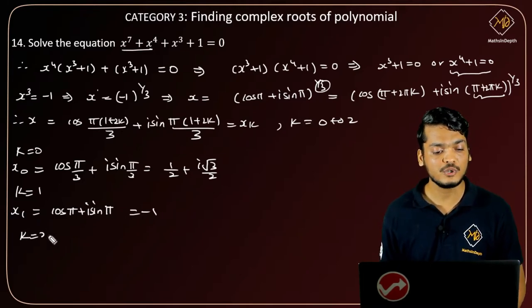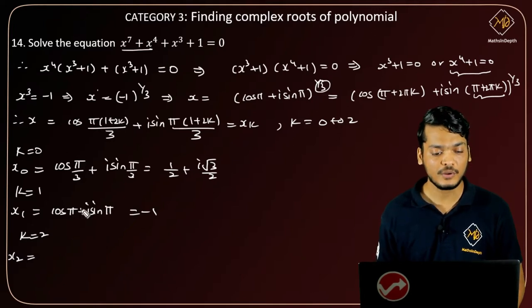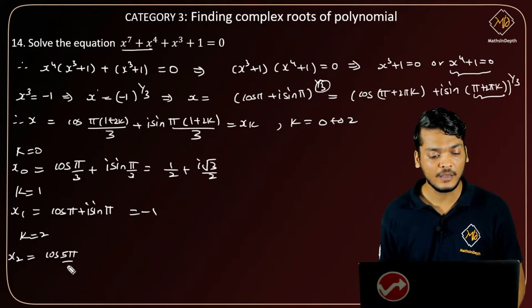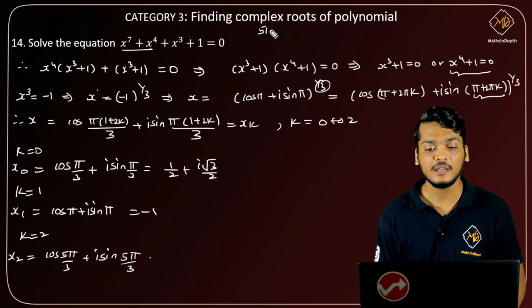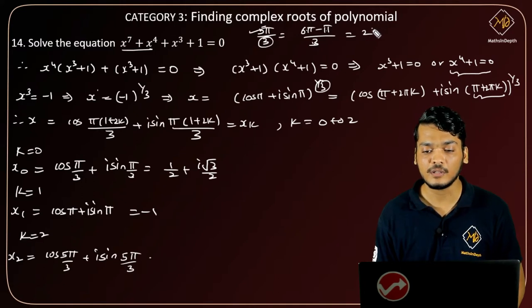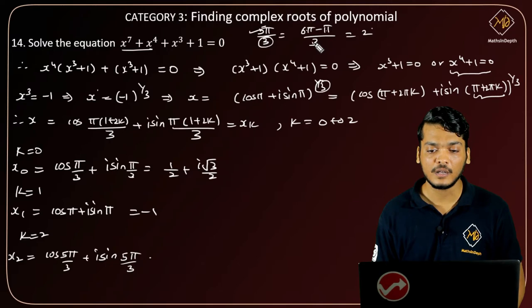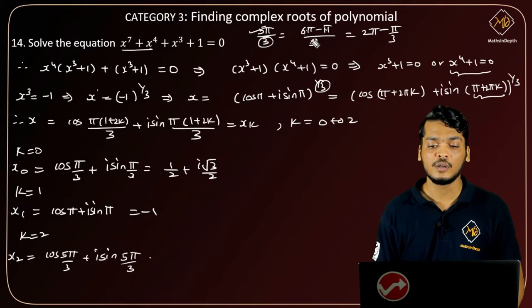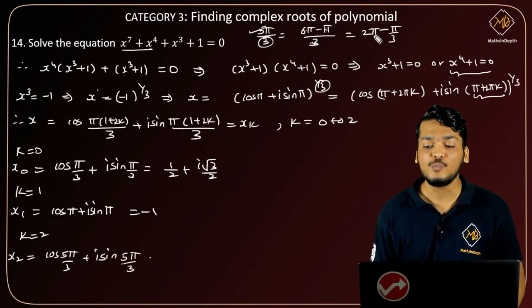For k equals to 2, x_2 will be 2 into 2 plus 1 is 5, cos of 5 pi by 3 plus i times sine 5 pi by 3. Now 5 pi by 3 can be written as 6 pi minus pi by 3. Whatever value is in the denominator, write the numerator as the closest multiple of 3. So 5 pi's closest multiple of 3 is 6 pi, so 6 pi minus pi by 3. When we divide 6 pi by 3 we get 2 pi, and when we divide pi by 3 we get pi by 3. So 5 pi by 3 is equals to 2 pi minus pi by 3.